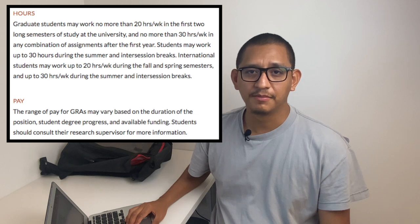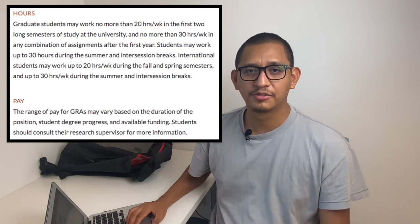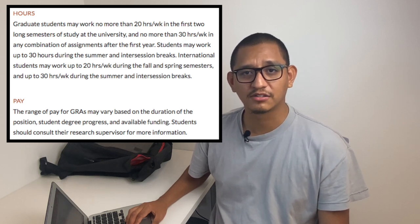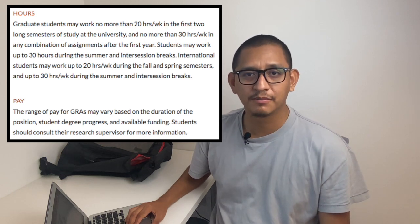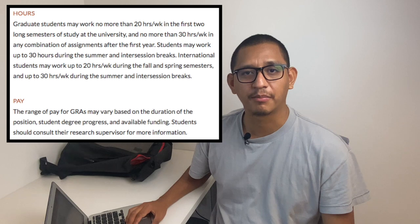Usually a graduate student researcher position lasts a full academic year and can be renewed depending on the program and funding. Ask those questions before you accept. In my case, since we're on the quarter system, mine lasts three quarters and I'm not hired for the summer unless they have summer funding. Knowing the employment dates matters so you can find other funding or positions on campus if needed.